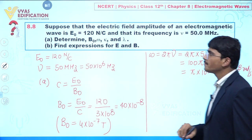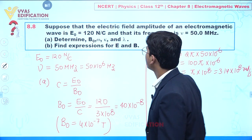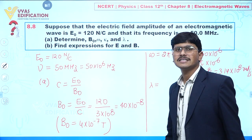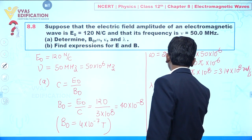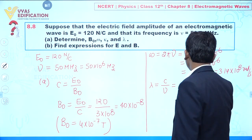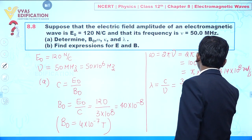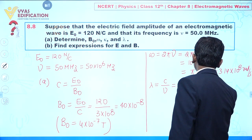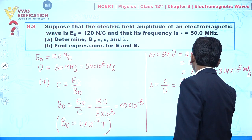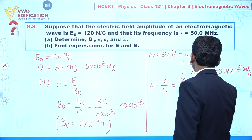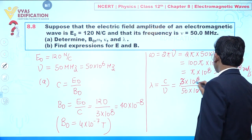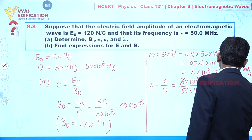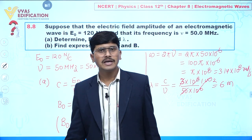The third objective is to calculate k, but first we find lambda. Lambda = c / frequency = (3 × 10⁸) / (50 × 10⁶). Simplifying, this gives 3/50 × 10² = 6 meters. So the value of lambda is 6 meters.